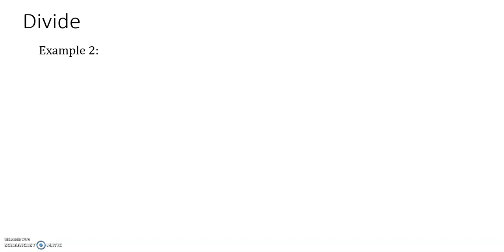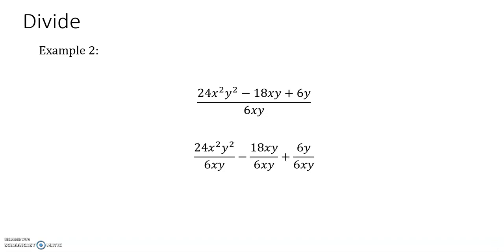Example 2: 24x squared y squared minus 18xy plus 6y, all divided by 6xy. Each term of the trinomial gets divided by that monomial 6xy.